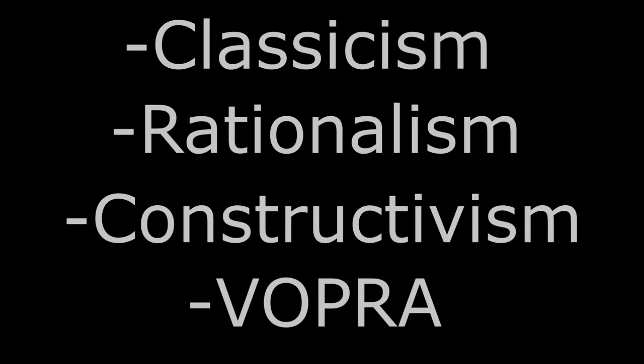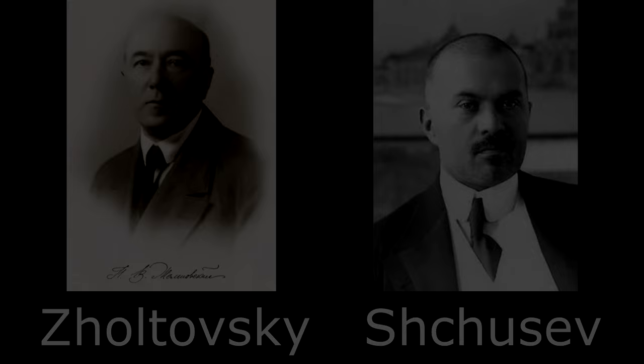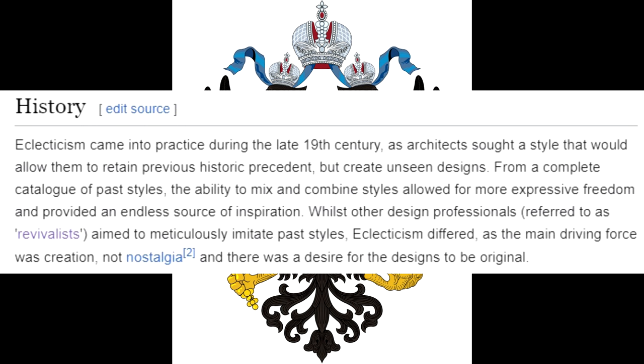Classicism drew inspiration especially from ancient Greco-Roman models, the Renaissance, and Russian national architecture. Its leading figures were Sholtovsky and Shkutsev. There was also a style in the late Russian Empire known as eclecticism, a vulgarized type of architecture using pseudo-classical sources. Enemies of classicism often lumped them both together into the eclectic category.